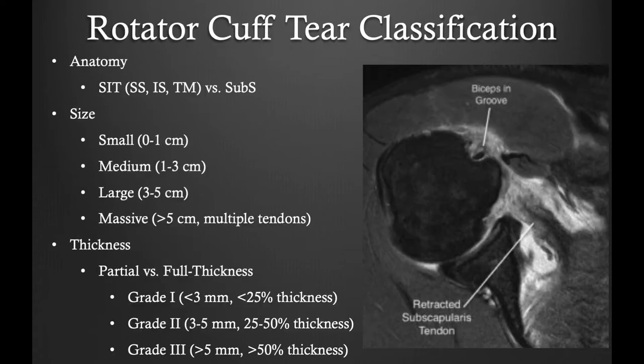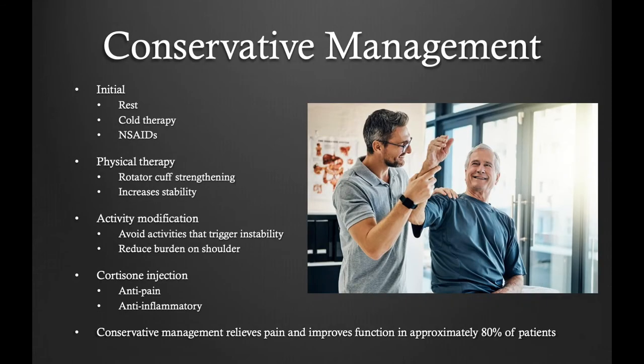Rotator cuff tears can be classified in several ways, however it's typically most useful to classify these as either partial thickness rotator cuff tears or full thickness rotator cuff tears. Typically conservative management is indicated for partial thickness rotator cuff tears. I typically start with rest, physical therapy, activity modification, and cortisone injections.